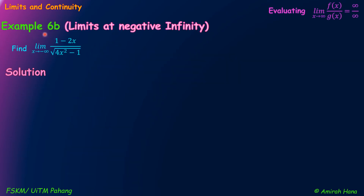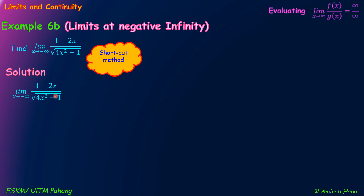How about example 6b — limits at negative infinity? We use the same function, but now we want to find the limit as x approaches negative infinity. When we use the shortcut method, we choose the term containing the highest power of x in the numerator and the term containing the highest power of x in the denominator. So we write: limit as x approaches negative infinity of negative 2x over the square root of 4x squared.